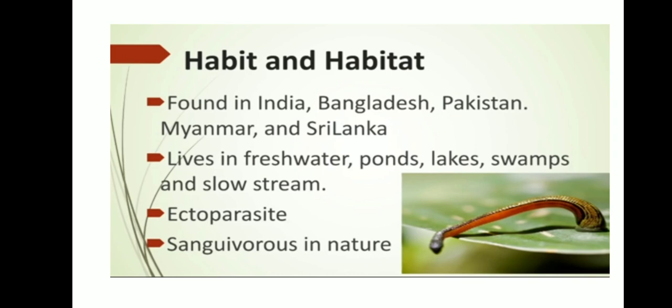If the leech lives over another organism, it just sucks the blood from that organism — that is the food for leech. It is sanguivorous in nature, meaning blood-sucking. Not only leech, but mosquito, flea, bug, or some birds are also examples of sanguivorous animals. These animals live over the body of other living organisms and suck the blood. That is the habit and habitat of leech.